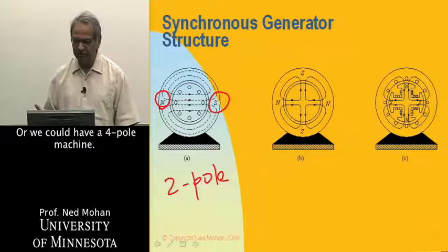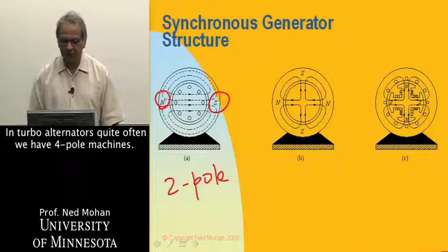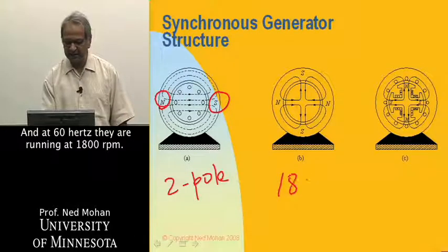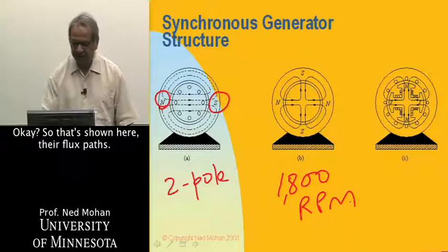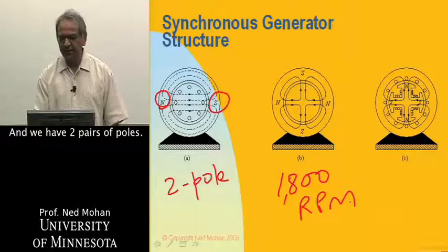Or we could have a four-pole machine in turbo alternators. Quite often, we have four-pole machines. And at 60 hertz, they are running at 1,800 RPM. So that's shown here, the flux paths. And we have two pairs of poles,